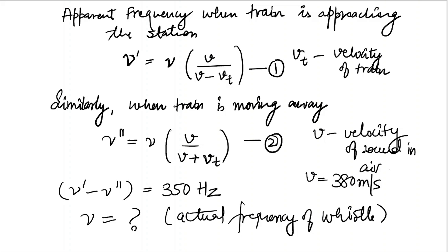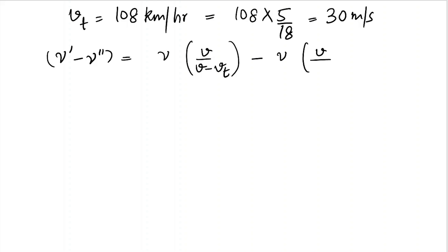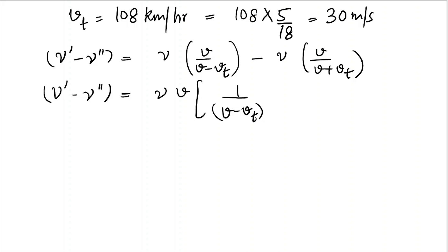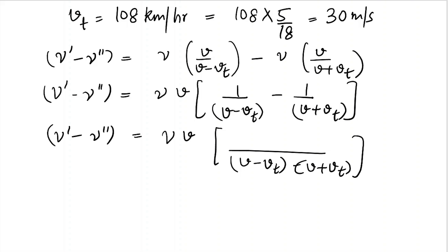We take the difference of equation one and equation two: mu-bar minus mu double-prime equals mu times v over (v minus vt) minus mu times v over (v plus vt). Simplifying, mu and v are common factors, giving us one over (v minus vt) minus one over (v plus vt).